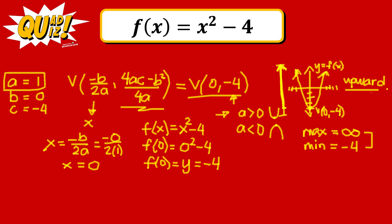The concavity determines whether the vertex is the lowest or highest point. If the graph opens upward, the y-coordinate of the vertex is the minimum value, and the maximum extends to positive infinity without bound. This is why the vertex, concavity, and maximum-minimum values are interrelated — the y-coordinate of the vertex, anchored by this formula, gives us these values.